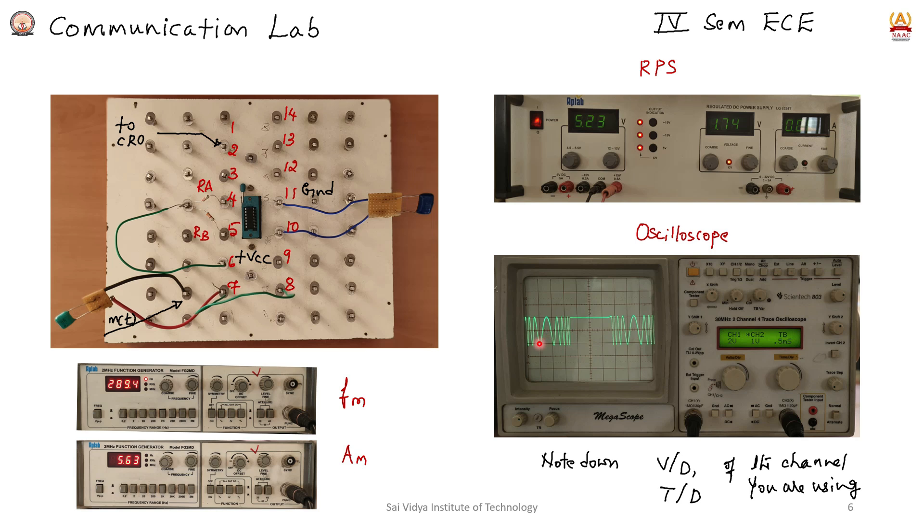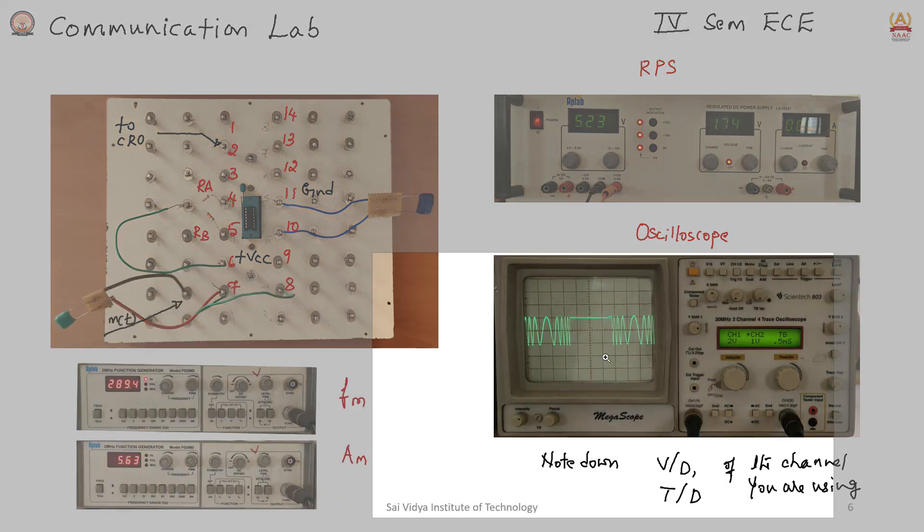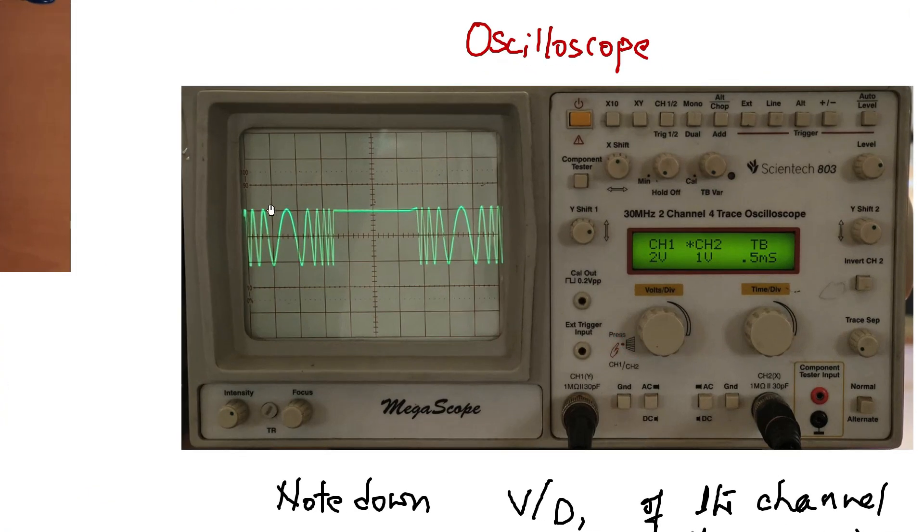In this waveform, we observe the low frequency and high frequency components. Find the distance between the low frequency component peaks for F minimum, and the distance between high frequency component peaks multiplied by time per division gives F maximum.